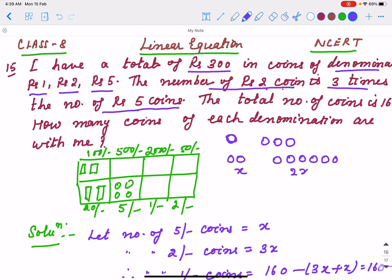then 2 rupee coins are 2x. Sorry, 3x. Which coins are there? 5 rupee coins and 2 rupee coins. If you calculate the total, the total number of coins is 160.